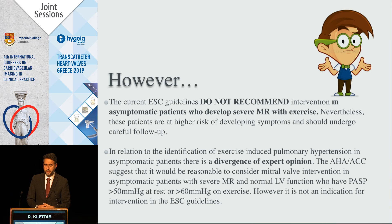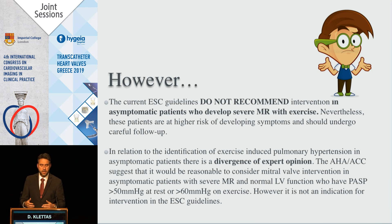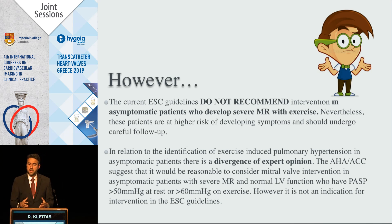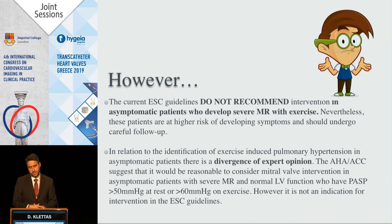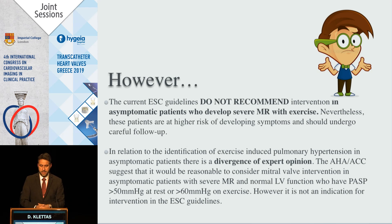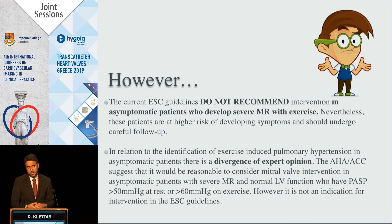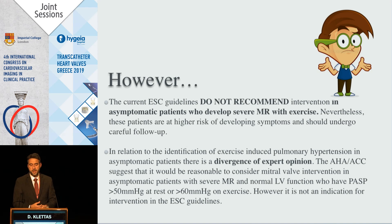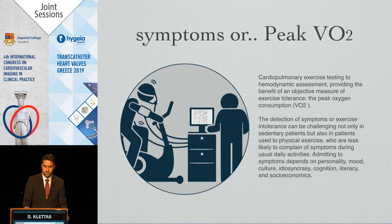However, the current European guidelines do not recommend intervention in asymptomatic patients who develop severe MR with exercise. Nevertheless, we must keep a close follow-up for these patients. There is a divergence in expert opinion between the American and European guidelines on this issue — the American guidelines suggest that when pulmonary pressures exceed 50 mmHg at rest or 60 mmHg on exercise, the patient should proceed to the next stage of management.